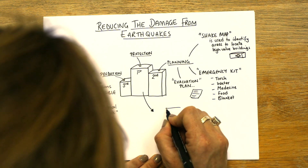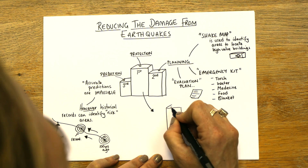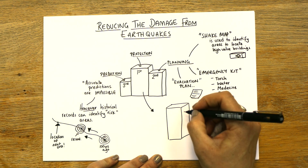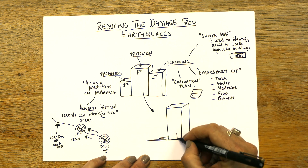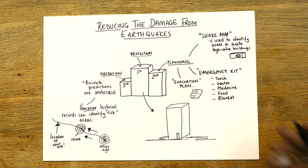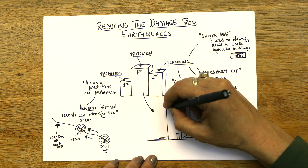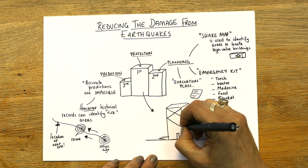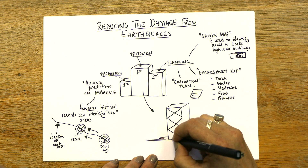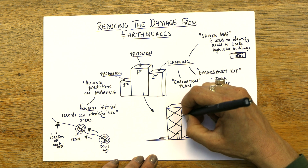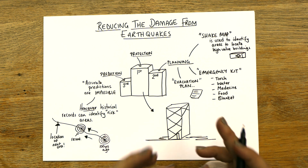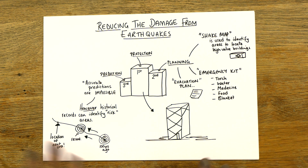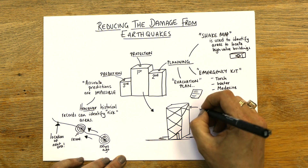Draw a building — give it a roof and a side. Imagine this is a high-rise block where you live. Then draw these cross structures inside. You wouldn't see them on the outside because they're on the inside. These cross structures are super useful — they allow the building to twist. When an earthquake happens, the ground goes left to right and forward and back, moving in lots of different directions. These are called cross structures.